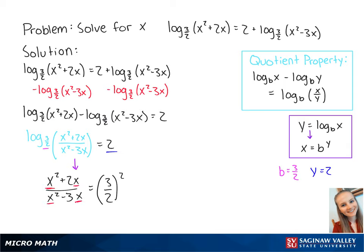The x's on the left side of the equation can be factored out. So we get x times x plus 2 over x times x minus 3 equals 9 over 4. So now the x's cancel out.